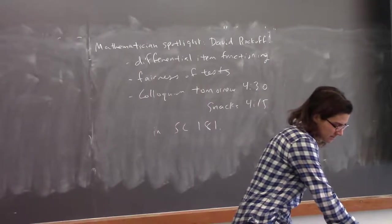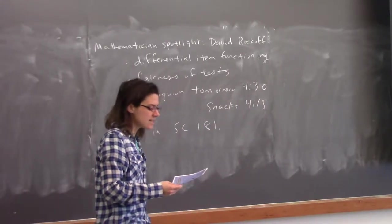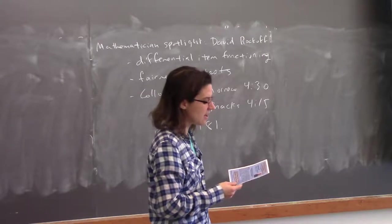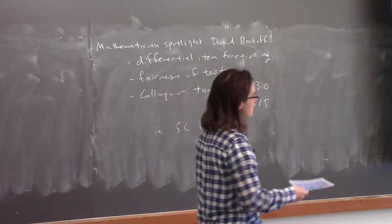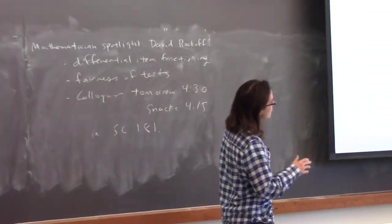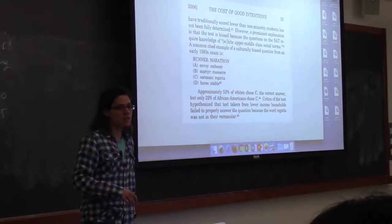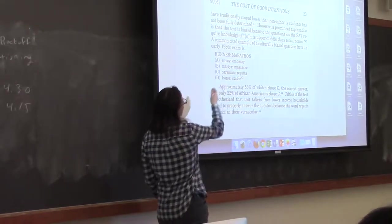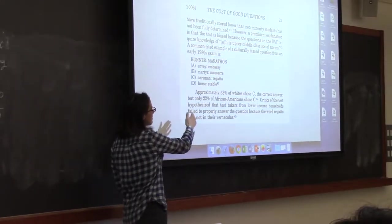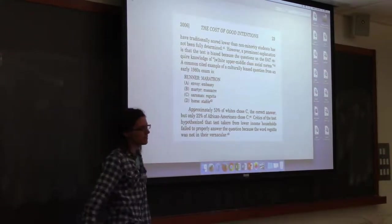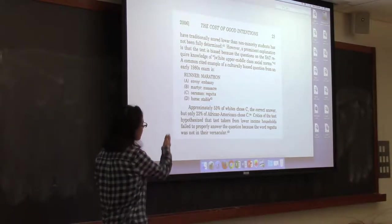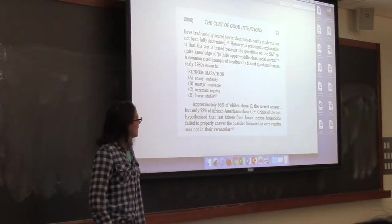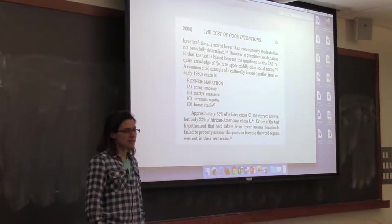Differential item functioning is when a test contains questions where people who have the same ability level but are from different subpopulations have unequal probabilities of answering correctly. Here's the most famous example: the SAT analogy question — 'runner is to marathon as what is to what?' The options are: envoy is to embassy, martyr is to massacre, oarsman is to regatta, or hearse is to stable. The answer is C. If you know what an oarsman and a regatta are, it's actually a really easy question.